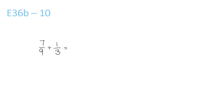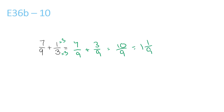LCM of 9 and 3 is 9. 7 over 9 stays the same, plus — times the top and bottom by 3 — gives you 3 over 9, so that gives you 10 over 9. 9 goes into 10 once, remainder 1 over 9.